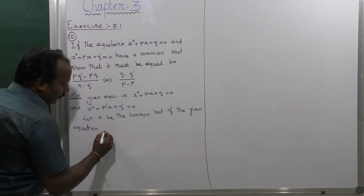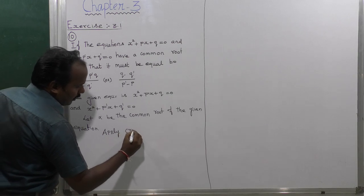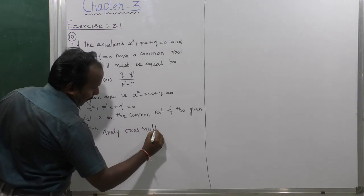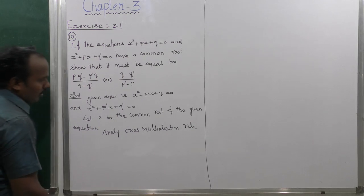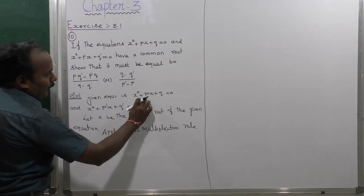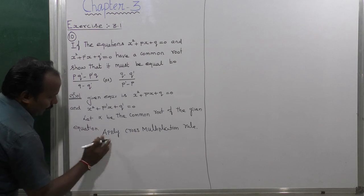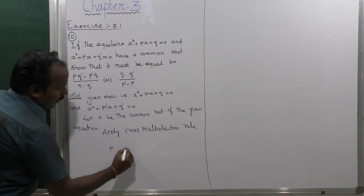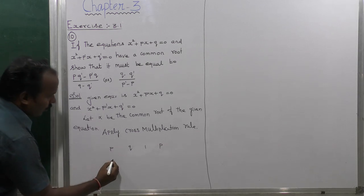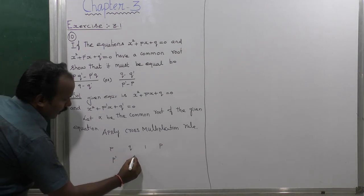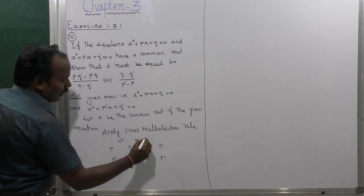By applying the cross-multiplication rule to the given equations: the first equation has coefficients p, q, 1 and the second equation has coefficients p', q', 1. Setting up the cross-multiplication gives us expressions for alpha² and alpha.